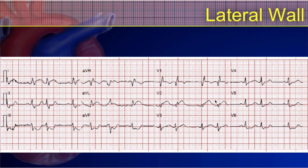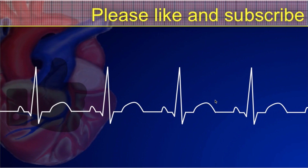Finally, let's look at a lateral wall infarct. Labeling quickly: inferior is 2, 3, and AVF; high lateral is 1 and AVL; low lateral is V5 and V6; V1 and V2 are the septal leads; V3 and V4 are anterior. If leads 1 and AVL both have signs of an acute infarction, you would say that's the lateral wall — more specifically, the high lateral wall. Understanding which leads look at the same area of the heart is essential before you try to interpret a 12-lead ECG for any signs of ischemia, injury, or infarct.